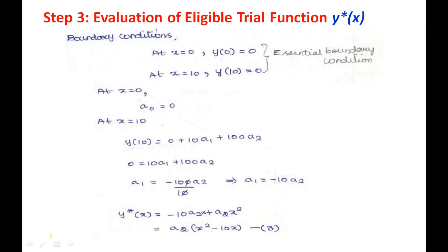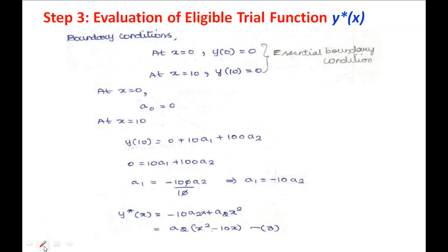Applying x = 0, y = 0 gives a₀ = 0. Applying x = 10, y = 0 gives: 10a₁ + 100a₂ = 0, so a₁ = −10a₂. After substituting, the eligible trial function becomes: y*(x) = a₂(x² − 10x). The eligible trial function y*(x) is used for finding the residual function, distinguished from the general trial function y(x).